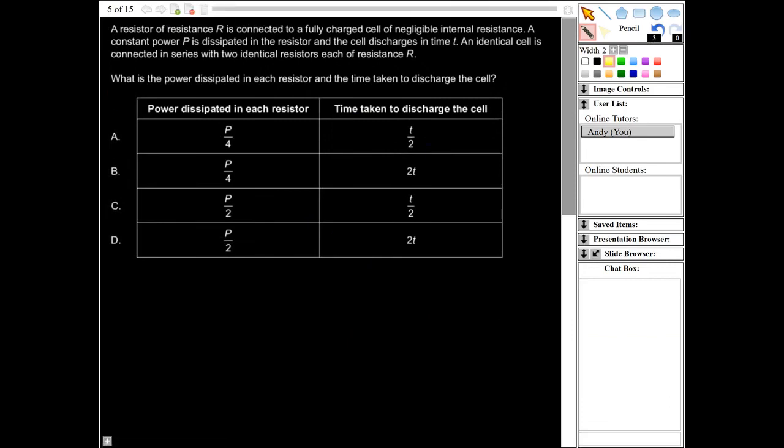A resistor of resistance R is connected to a fully charged cell of negligible internal resistance. A constant power P is dissipated in the resistor, and the cell discharges in time T. An identical cell is connected in series with two identical resistors, each of resistance R. What is the power dissipated in each resistor and the time taken to discharge the cell?